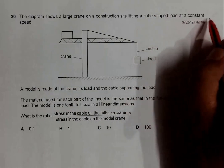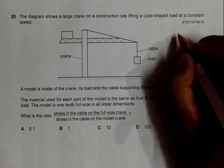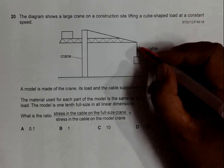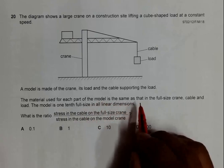Constant speed means that the upward forces and the downward forces on it should be equal. A model is made of the crane, its load, and the cable supporting the load.